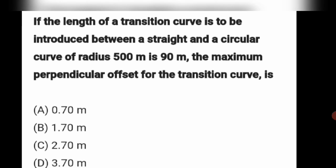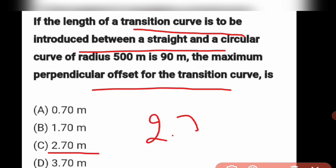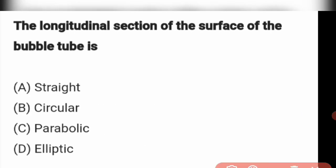Next question: If the length of a transition curve to be introduced between a straight and circular curve of radius 500 meters is 90 meters, the maximum perpendicular offset for the transition curve is how much? Using the formula for perpendicular offset, the answer is 2.7 meters. Option C: 2.7 meters.